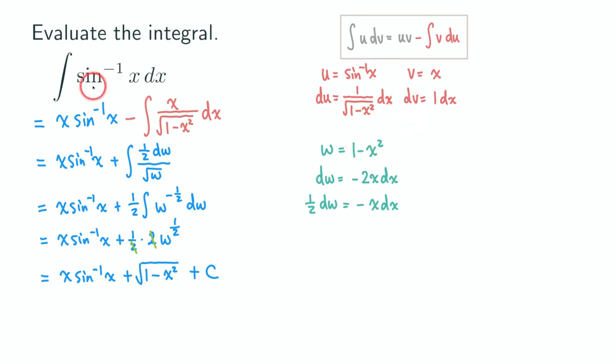We only need to do it once. So if you encounter an inverse trig function, the usual way to do it is to let u be the inverse trig function and then let dv be whatever stuff that you have. I will do more complicated examples next time. So thank you for watching.